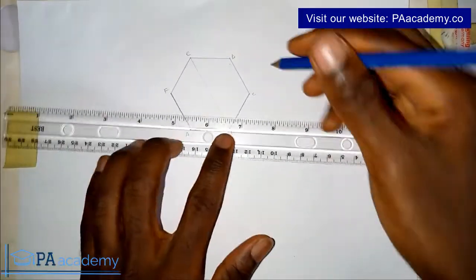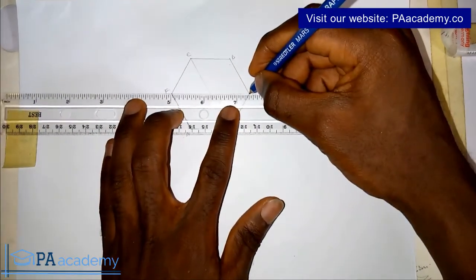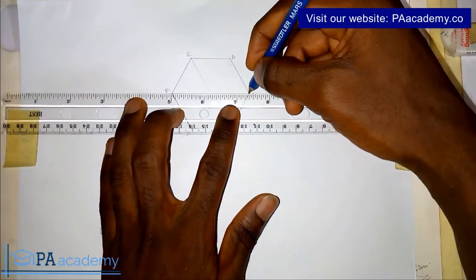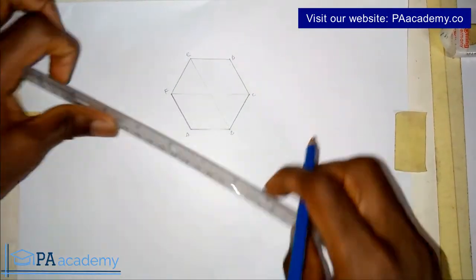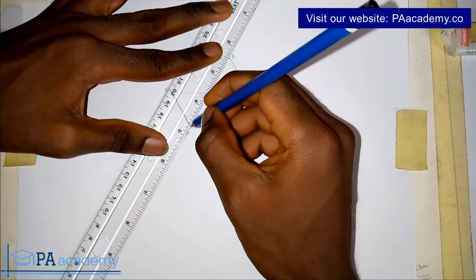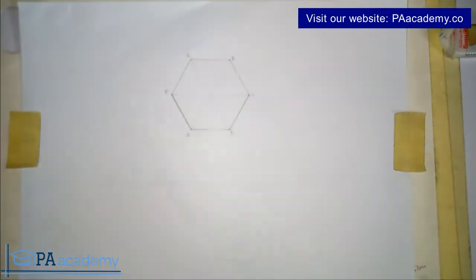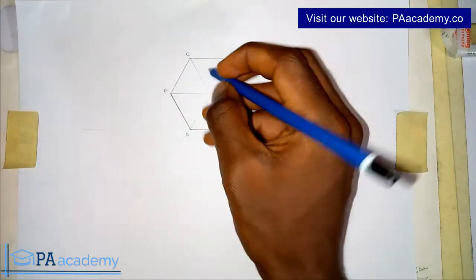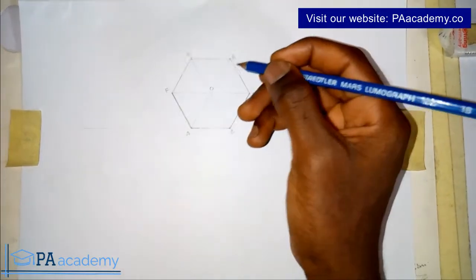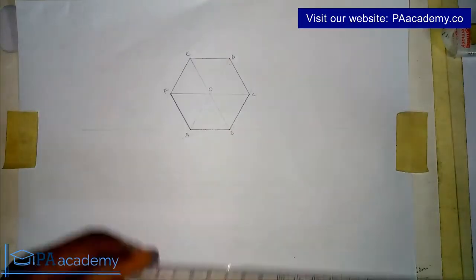Then I'll join point F to point C. So I'll also join then point D to point A. So you see that the point of intersection represents the center of the polygon. So let me call that point, point O. So for this particular polygon, that's the hexagon, I use a side of 3 cm.